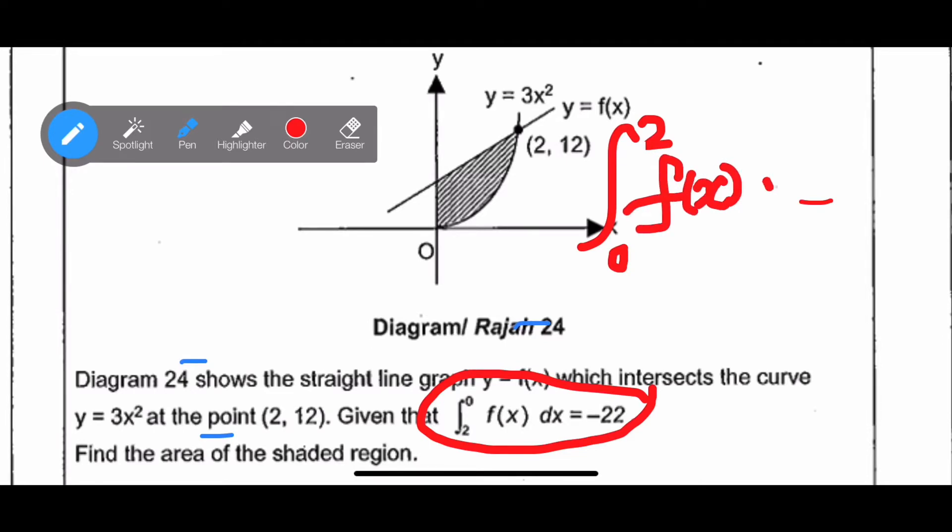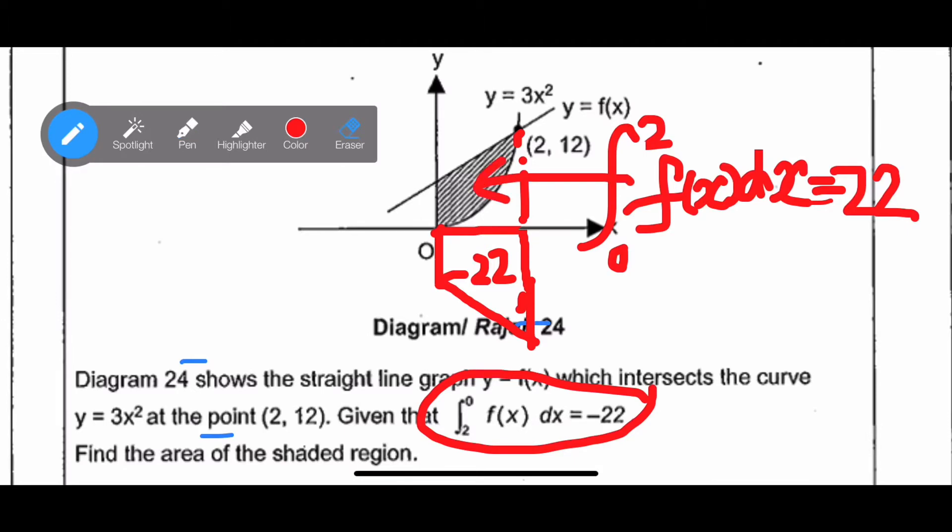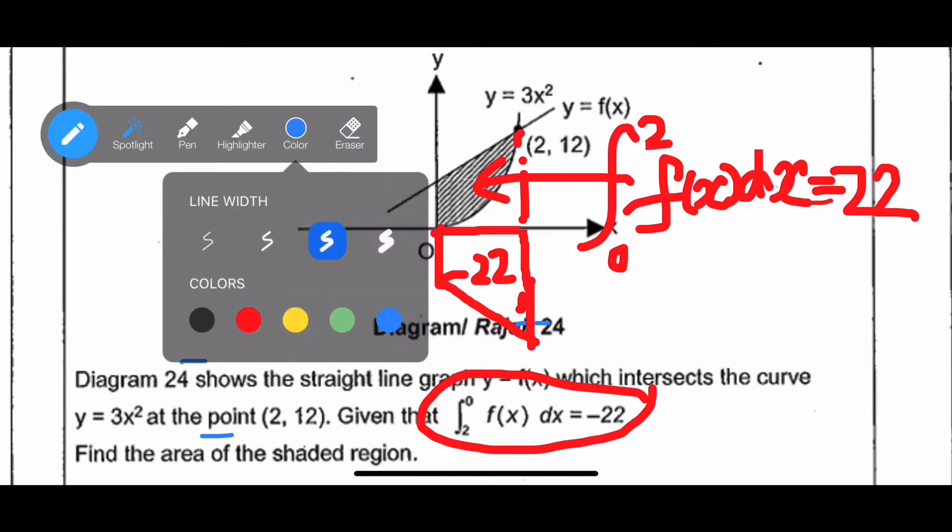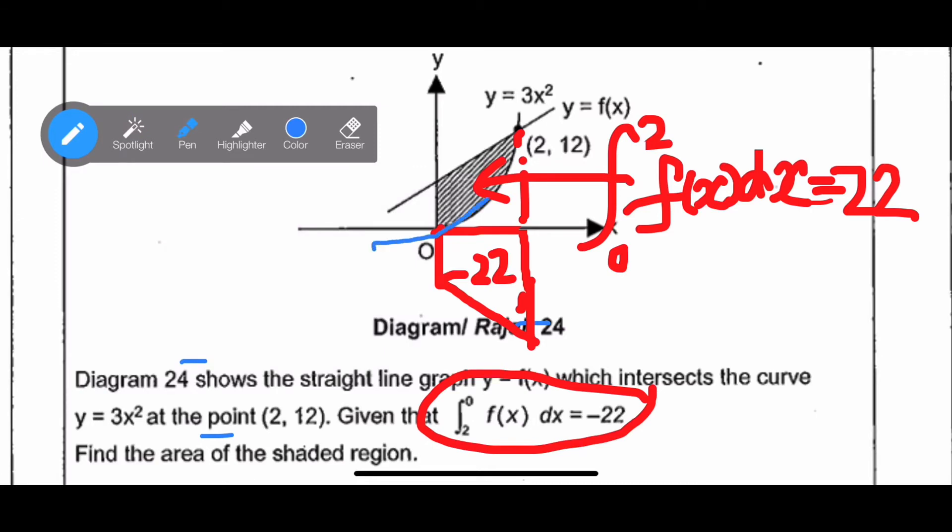Integrate from 0 to 2 for the function dx is given as positive 22. Because the area which is under the x-axis is negative 22, that is from integrate from 2 to 0. When the limit is upside down, we have to change the value from negative to positive. So it's actually telling you that the area for the trapezium above the x-axis is positive 22.